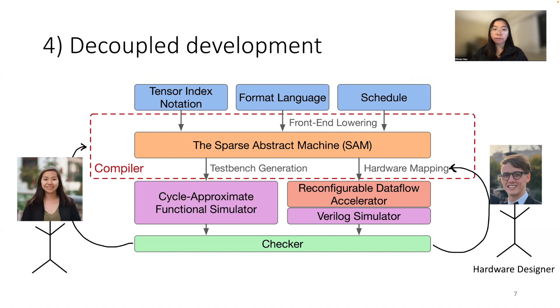Additionally, a further benefit of the sparse abstract machine and the entire system is that we can leverage the expertise of non-hardware engineers like software or systems engineers to help with this agile hardware design flow.